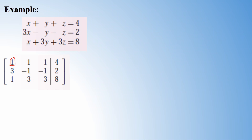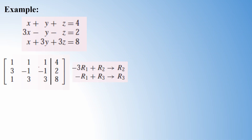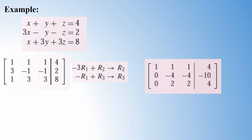The leading entry in the first row is already 1. To make the entry below it zero, multiply the first row by -3 and add to the second row to get a new second row. Then to make the next entry zero, multiply the first row by -1 and add to the third row to get a new third row. After these operations, we have completed the first phase of row echelon form.